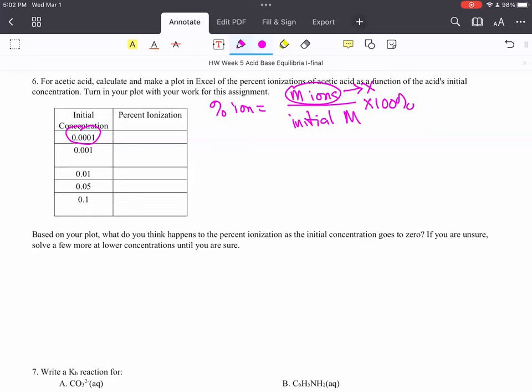So this is acetic acid. So acetic acid, CH3COOH. I'm going to set up an ICE table for it. I'm going to transfer a proton, make hydronium ions, and leave ourselves with some acetate ions.